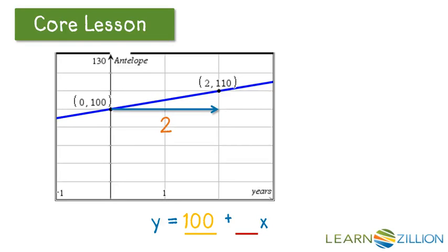And then to find out the rate of change here, we can count. So we identify 2 points. So I identify 2,110 because that's another part of the graph that it crosses at a known intersection there. And so I count. 2 years, the antelope went up 10. So I can do my change in y divided by change in x, which is 10 divided by 2. And that's 5. So again, we should get the same equation, and we do.